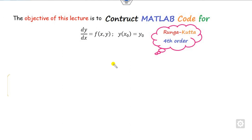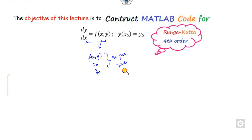The objective of this short video is to construct a MATLAB code for a first order differential equation using the Runge-Kutta method. We will try to generalize this MATLAB code so that you can change the value of f(x, y), y0, and x0 as per your own convenience. Once you change these values, the MATLAB code will run accordingly.